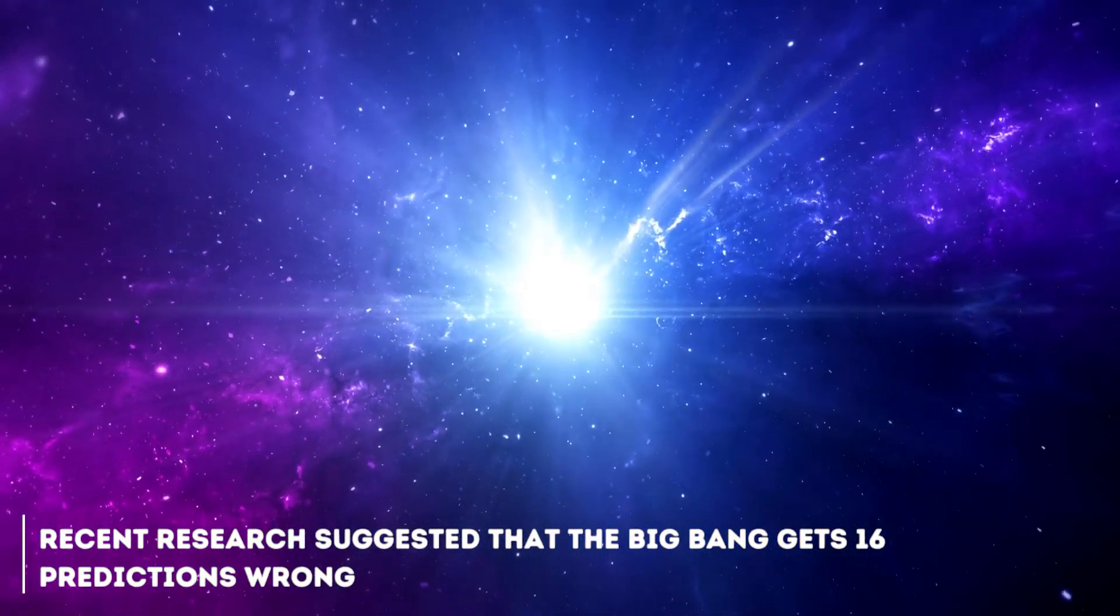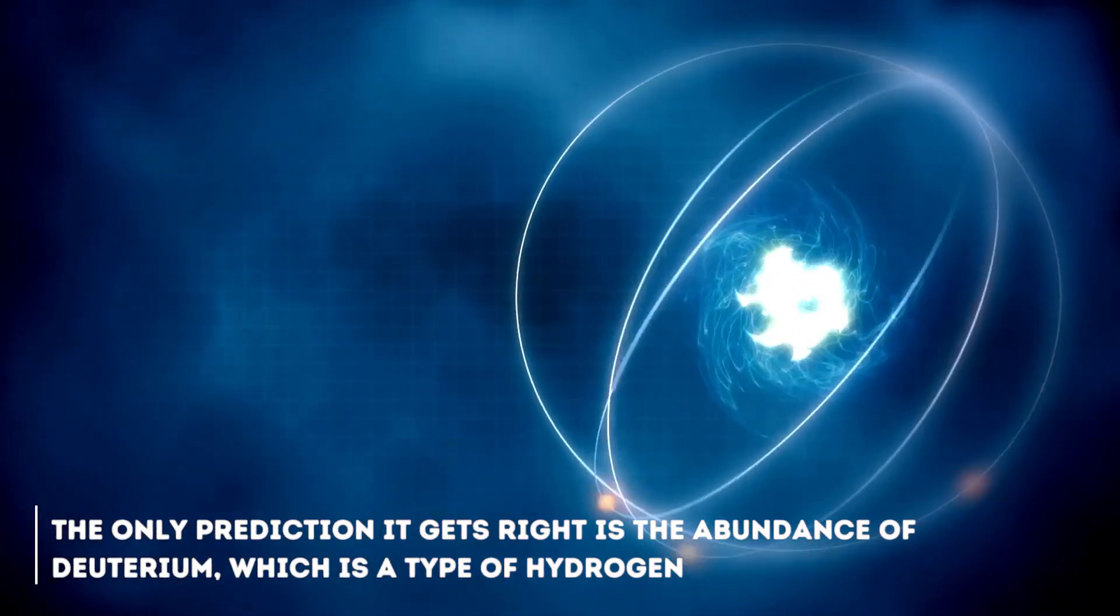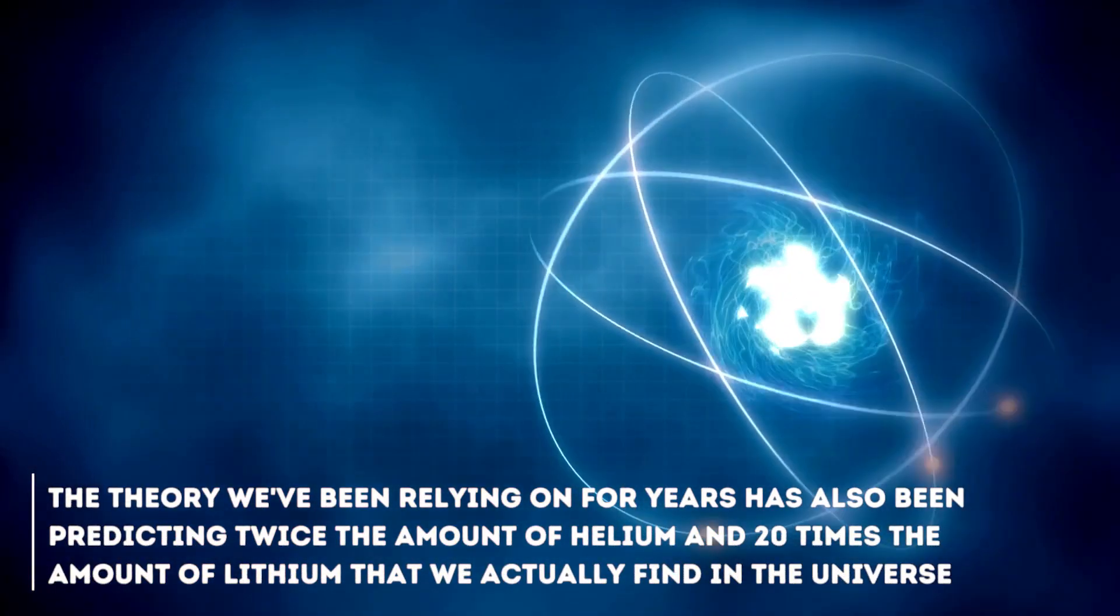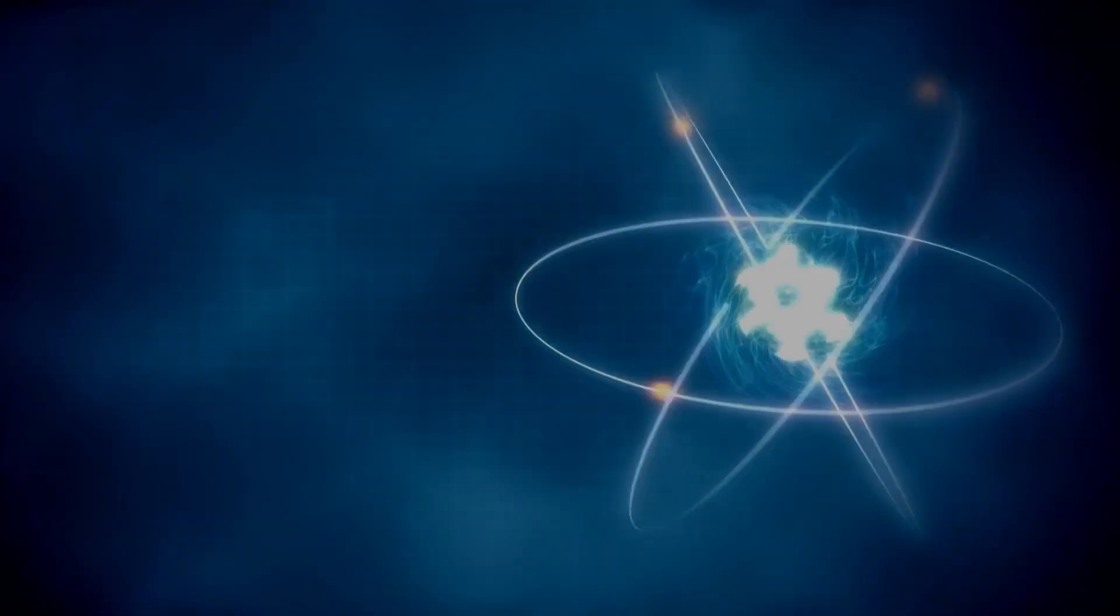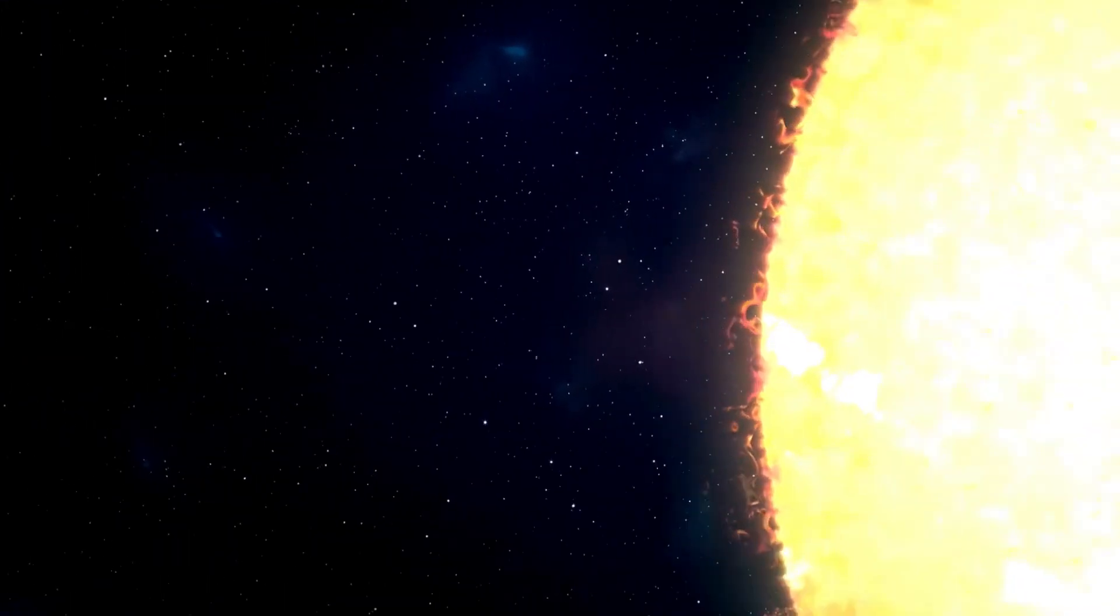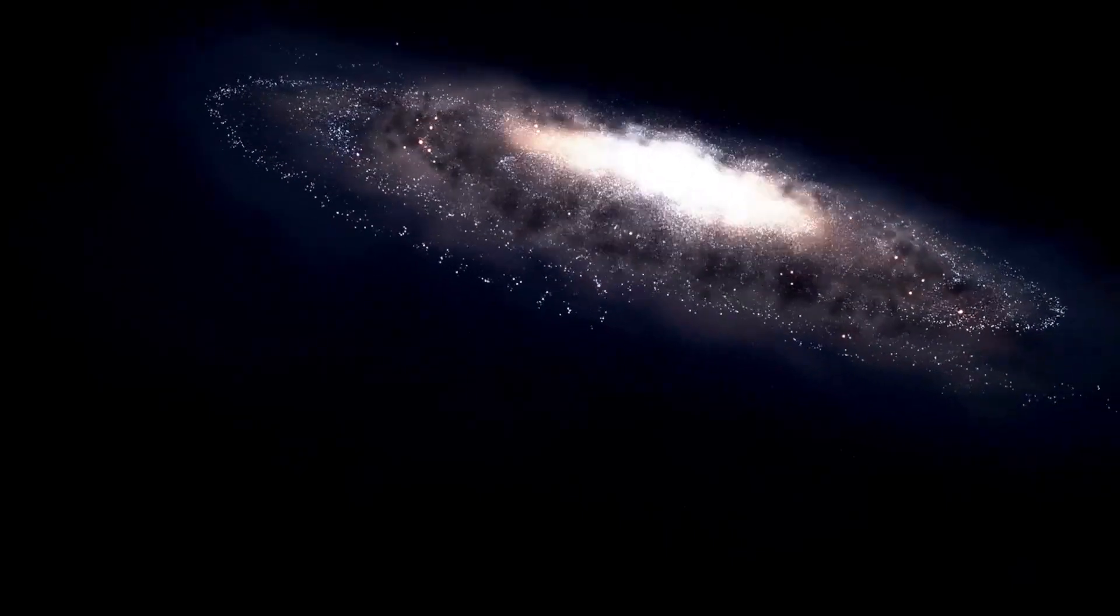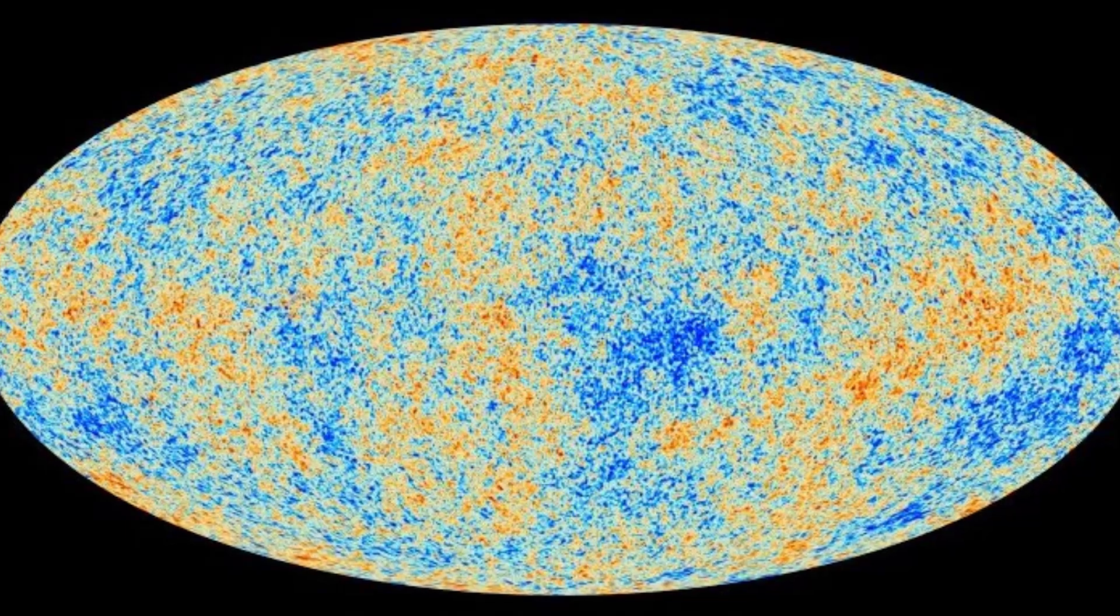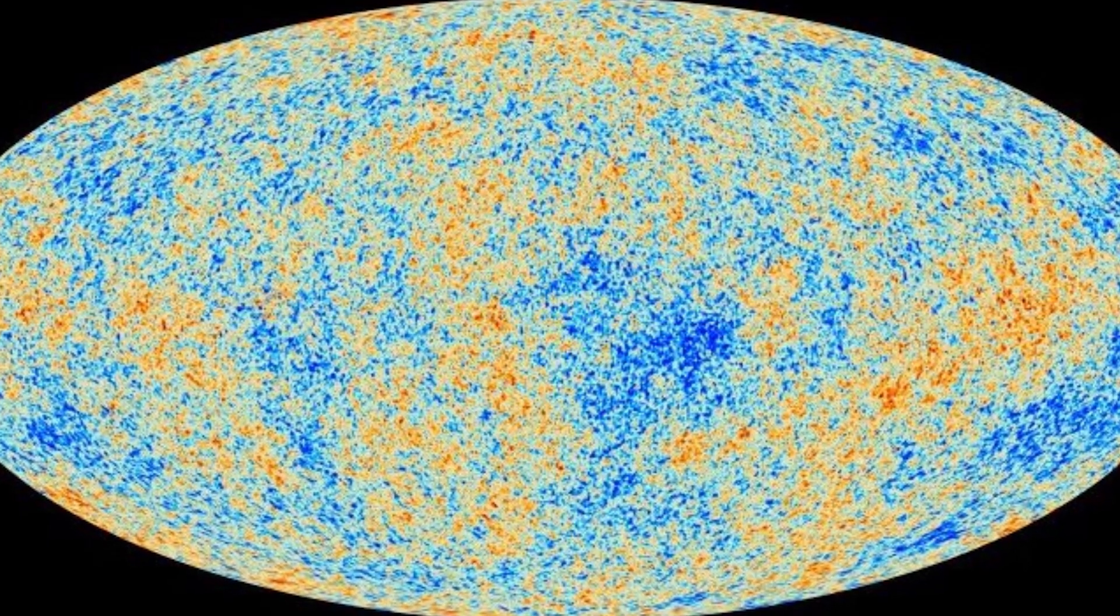Recent research suggested that the Big Bang gets 16 predictions wrong. Yes, 16. The only prediction it gets right is the abundance of deuterium, which is a type of hydrogen, but that's not all. The theory we've been relying on for years has also been predicting twice the amount of helium and 20 times the amount of lithium that we actually find in the universe. In addition, the Big Bang has trouble explaining the huge structures we observe in the universe. According to the theory, these structures are simply too large to form in the time since the beginning of the universe. The theory stumbles a bit in predicting the density of matter in the universe. And here comes a curious fact. Those supposedly non-existent asymmetries in the cosmic microwave background turned out to exist. It's like a twist in the cosmic plot.